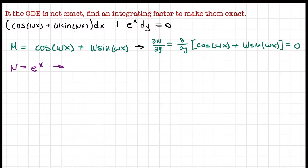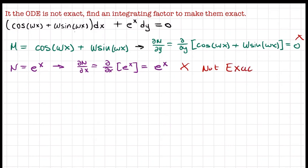Now for partial N partial x, we take the partial derivative of e to the x with respect to x, which gives us e to the x. You can see that these are not equal, so the equation is not exact.